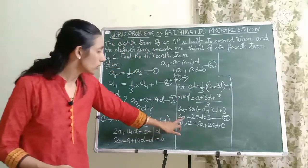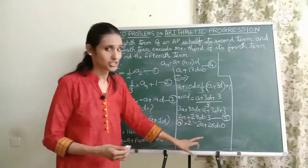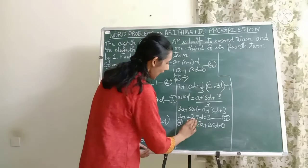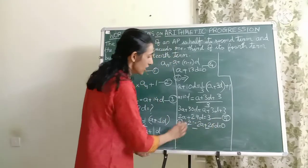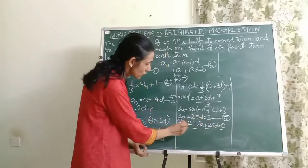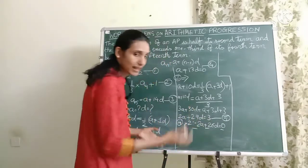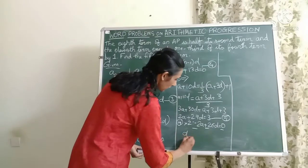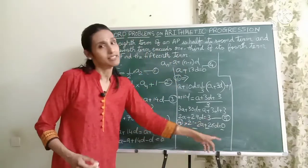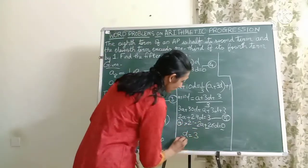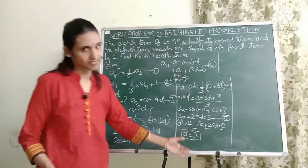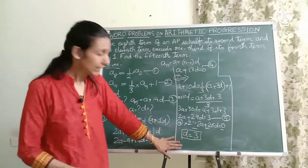Now what I can do is I can subtract these two equations. So when I do that, this 2A and minus 2A will get cancelled. You'll get 27D minus 26D which is nothing but D, and 3 minus 0 is 3. So my value of D is 3. I hope you got till here.